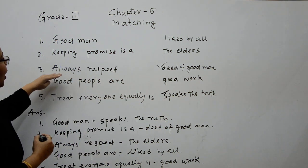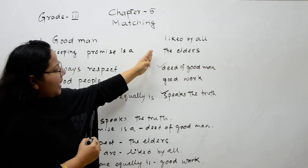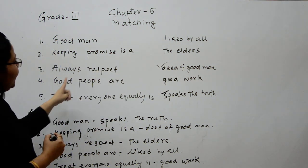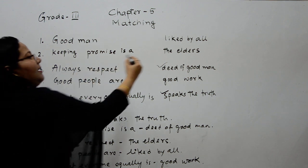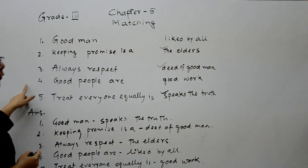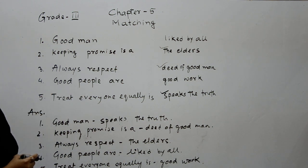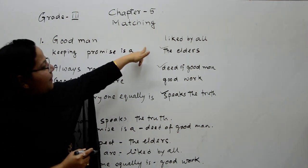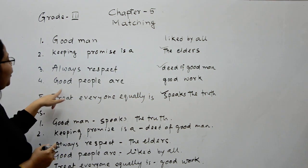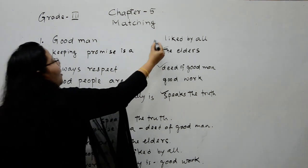Then the third one is 'always respect.' The options are 'liked by all,' 'the elders,' 'good word.' Which one? Always respect the elders. Okay. Now your fourth one: 'good people are.' The options are 'liked by all,' 'good word.' Which one? Good people are liked by all.